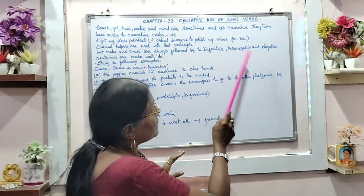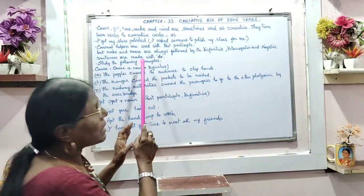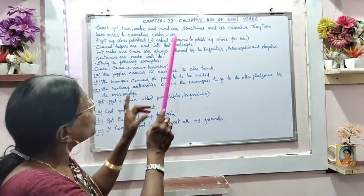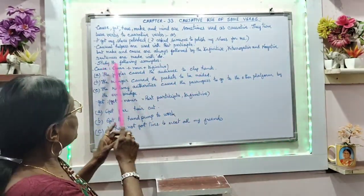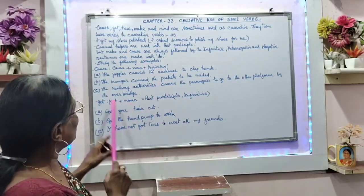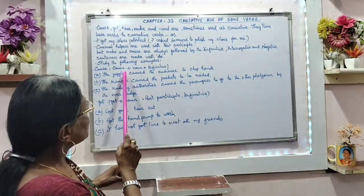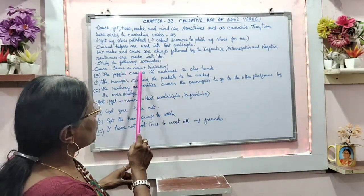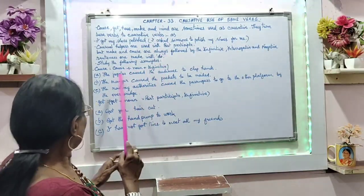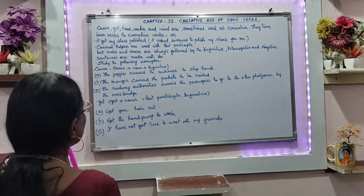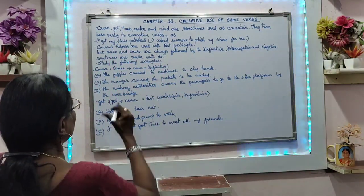Then interrogative and negative sentences are made with 'do'. When you study the following you will know better. The structure for 'cause' is: cause plus noun plus infinitive.